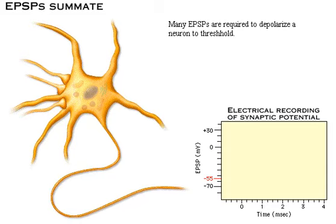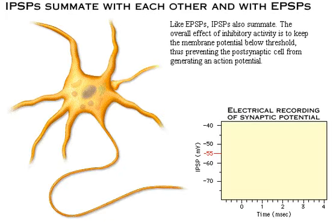Many excitatory post-synaptic potentials are required to depolarize a neuron to threshold. Like excitatory post-synaptic potentials, inhibitory post-synaptic potentials also summate. The overall effect of inhibitory activity is to keep the membrane potential below threshold, thus preventing the post-synaptic cell from generating an action potential. Click the axon to see a single IPSP.